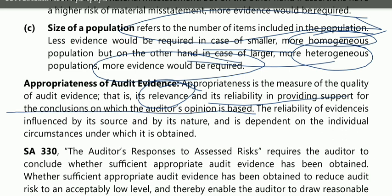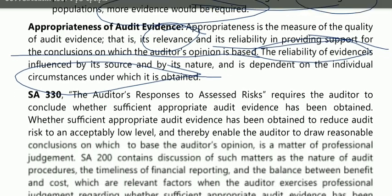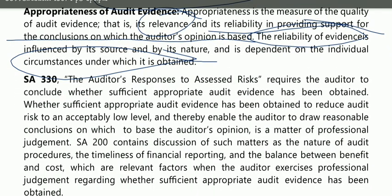The reliability of evidence is influenced by its source and by its nature, and is dependent on the individual circumstances in which it is obtained. So reliability depends on: where you obtained the audit evidence from, what nature it is, and which individual circumstances it depends on. All of these things come under appropriateness — so appropriateness means to what extent the evidence is relevant and reliable.